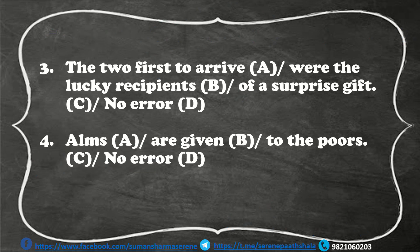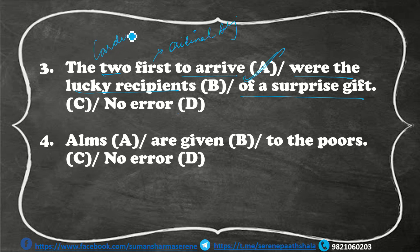'The two first to arrive were the lucky recipients of a surprise gift.' The error is in the A part. 'Two first' — first, second, third — in ko hum kehte hain ordinal adjectives. Aur one, two, three, four — jisse aap sankhya batate hain — isse hum kehte hain cardinal adjectives. Dhyan rahe, order humeshaa pehle aayega, fir number. Yani ki: 'the first two to arrive were the lucky recipients of a surprise gift.'